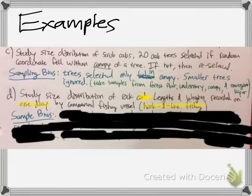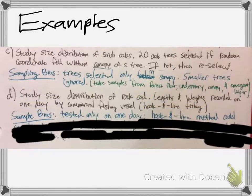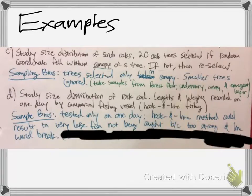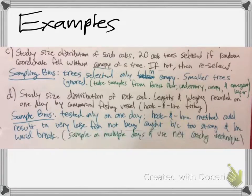So if they were to use a net, maybe it would work better. So that was a possible solution to write about. So again, the sample bias is only one day. They used the hook and line method. Very large fish not being able to be caught, too strong would break. And a solution would be to take this sample over multiple days, maybe even months, and use a net as another method of catching.